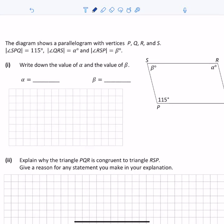I have a diagram showing a parallelogram with vertices P, Q, R, and S. Angle SPQ = 115°, angle QRS = α, and angle RSP = β. I need to find α and β. Alpha is easy because opposite angles in a parallelogram are equal, so if P is 115°, then α = 115° as well.